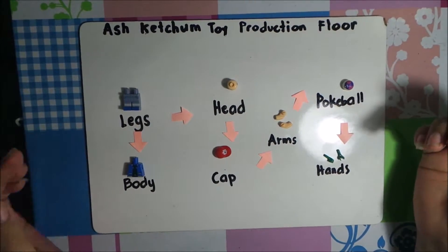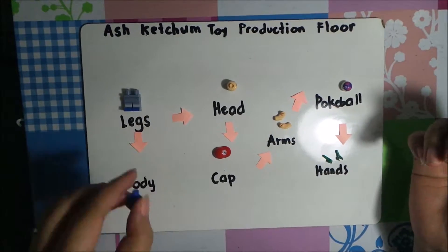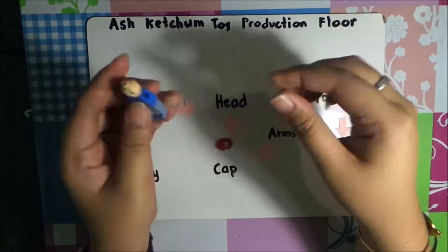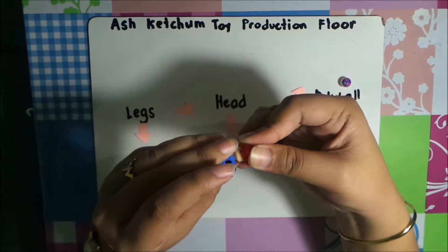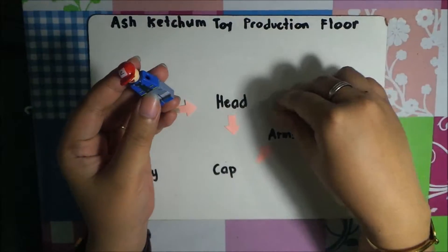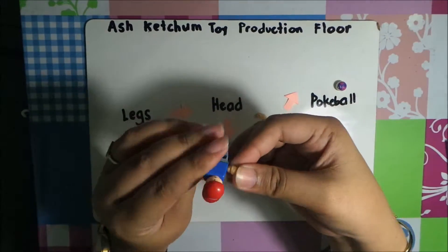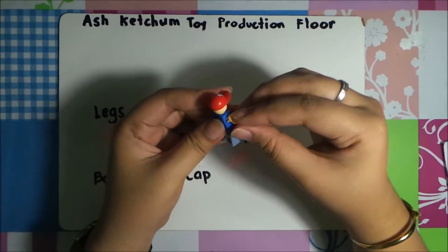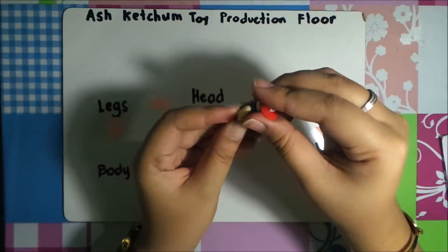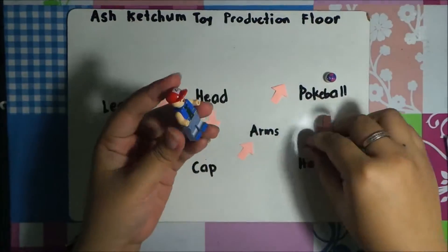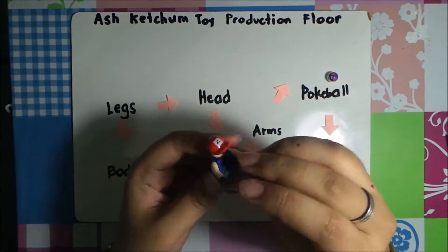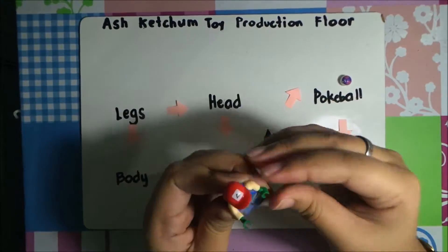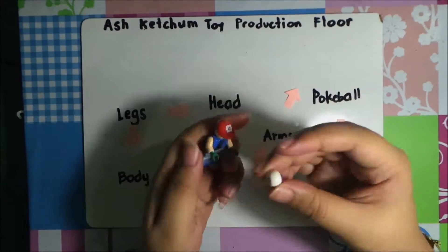Now we start assembling. We get the body and the legs. We get the head. We get the cup. The arms. And the pokeball.